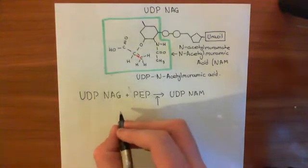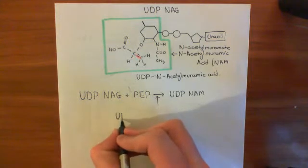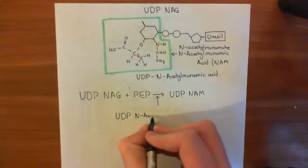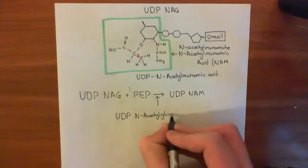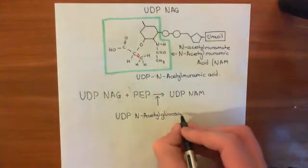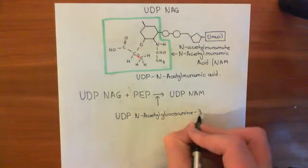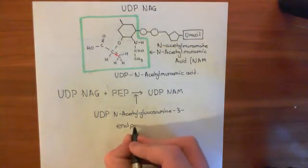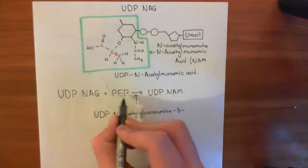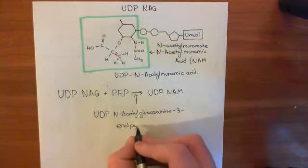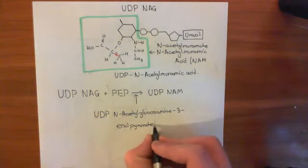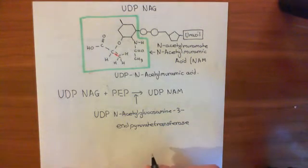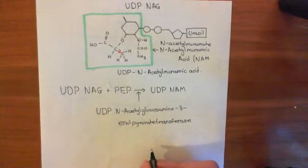It has a number of names. The most complex one is UDP-N-acetylglucosamine 3-enolpyruvate transferase. The '3' refers to the fact that the carbon we are adding the phosphoenolpyruvate group to is the third carbon. We're adding the enolpyruvate group — not the phosphate — so the name ends in transferase. That is the full systematic name: UDP-N-acetylglucosamine 3-enolpyruvate transferase.